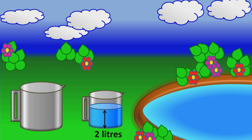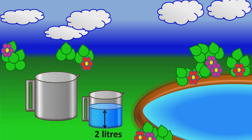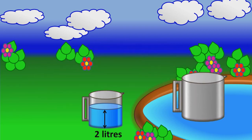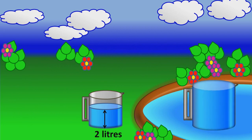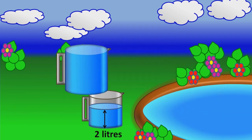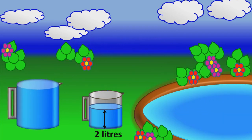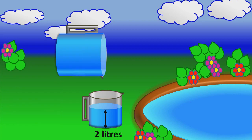Again fill the 5 liter container with water. Now it has 5 liters of water. Now pour the water into 3 liter container until it gets filled.